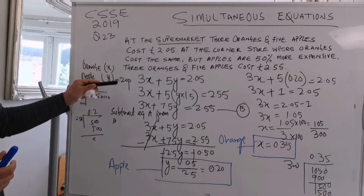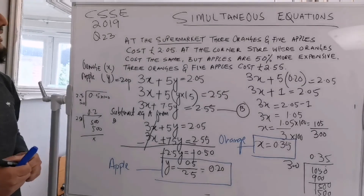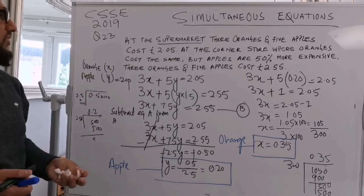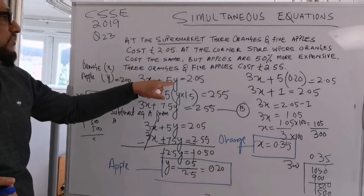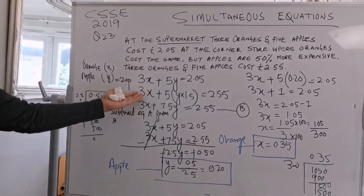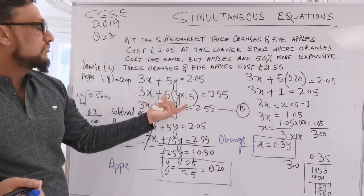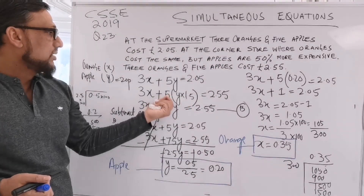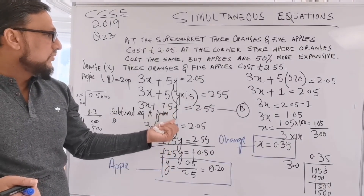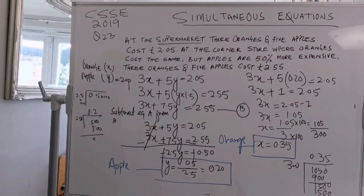So first of all you need to make an equation as per the question: the supermarket has 3 oranges and 5 apples costing 2 pounds and 5 pence, so 3x plus 5y equals 2.05. The corner store oranges are the same, so 3x is the same, but the apples are 50% more expensive, so 5 times 1.5 gives 7.5y, and they charge 2 pounds and 55 pence altogether.